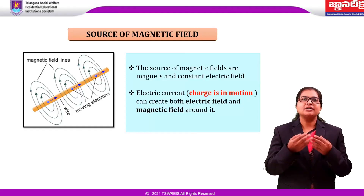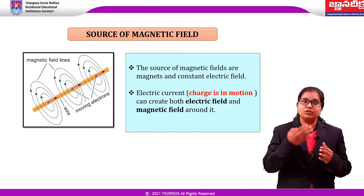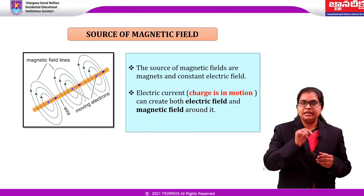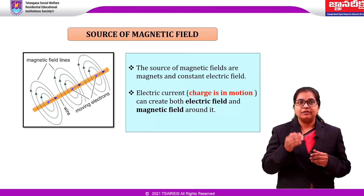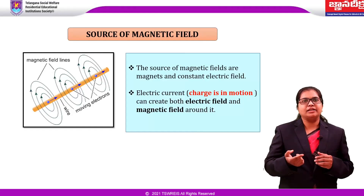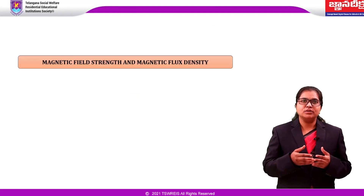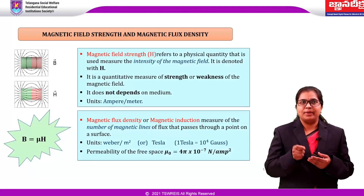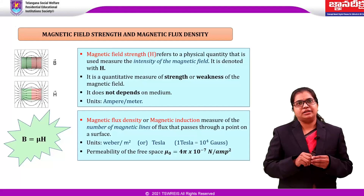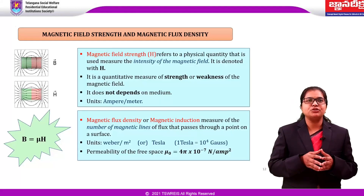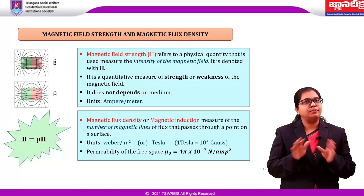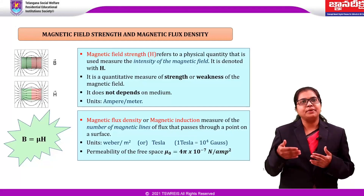Electric current — charges in motion — can create both the electric field and magnetic field around it. If a charge is at rest, it creates only an electric field. But when it is in motion, in addition to the electric field, it creates a magnetic field. Magnetic field strength is denoted H, which is a physical quantity used to measure the intensity of the magnetic field. It is a quantitative measure of the strength of the magnetic field. The units are ampere per meter.